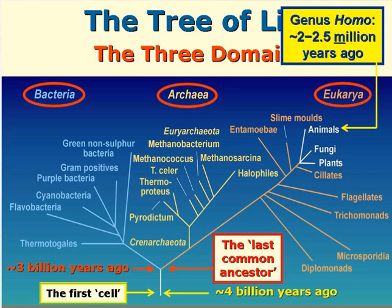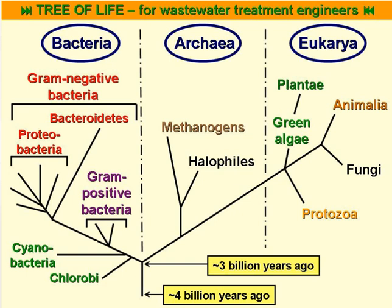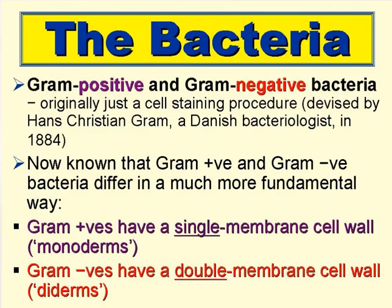We belong to the Animalia, and our genus Homo only started to appear roughly two to two and a half million years ago, so we're very recent newcomers to planet Earth. This is a version of the tree of life for wastewater treatment engineers, and we're now going to consider important groups in the three domains that are especially relevant to us as wastewater treatment engineers. First of all, the domain Bacteria.